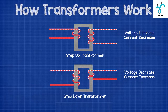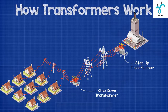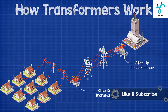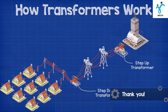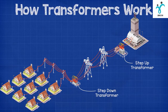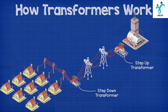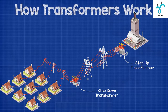For example, a power station needs to transport the electricity it has generated over to a city some distance away. The power station will use a step up transformer to increase the voltage and reduce the current, as this will reduce the losses through the long transmission cables. Then once it reaches the city, this will need to be reduced to make it safe and usable by buildings and homes, so there will need to be a step down transformer.